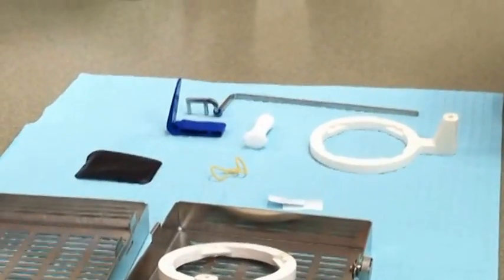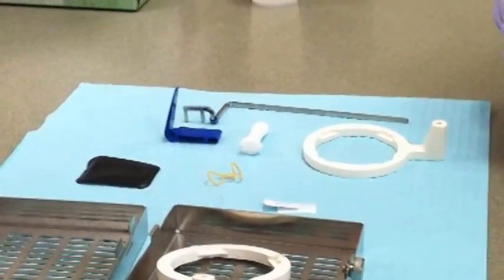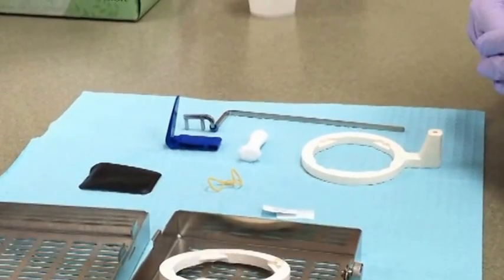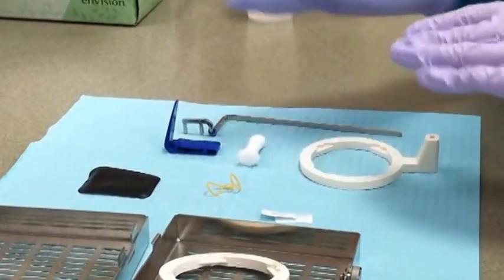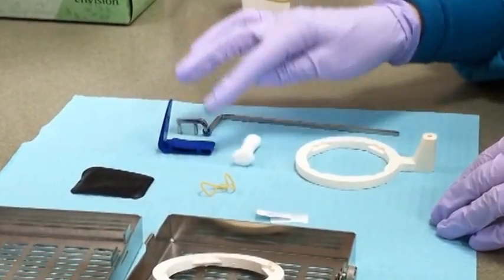This is group 4, demonstrating how to take a mandibular canine and lateral incisor periapical. We have our supplies laid out and we will be using the anterior XCP instrument.